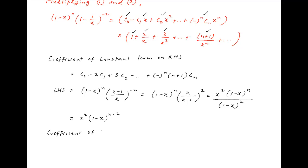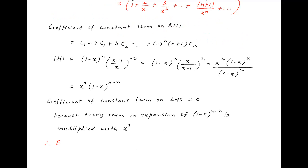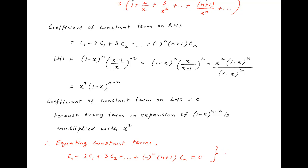The coefficient of the constant term in the expansion of the left hand side is equal to 0, because all terms are multiplied by x^2 and will therefore involve x^2 or higher powers of x. Equating the constant terms across both sides, we get c0 - 2c1 + 3c2 - ... + (-1)^n * (n+1) * cn = 0, which is the required result.